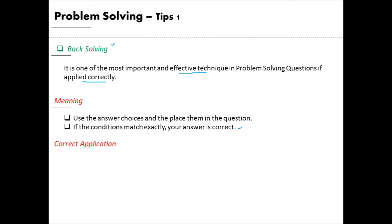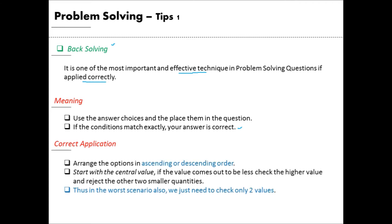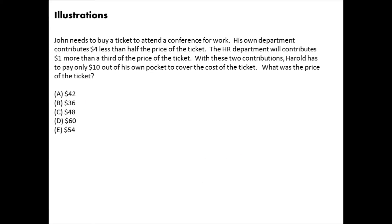The correct way to back solve: arrange the answer choices in ascending or descending order and start with the central value. If your result is a little more or a little less than needed, you can discard two options at once. In the worst case, you only need to check two values. Let's go through an example.